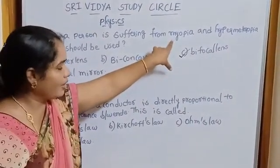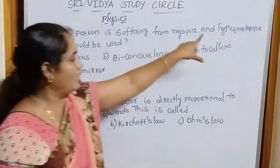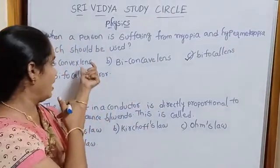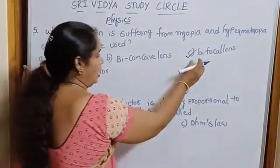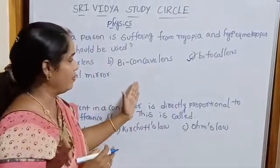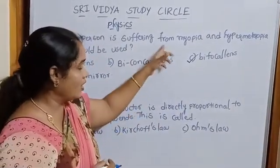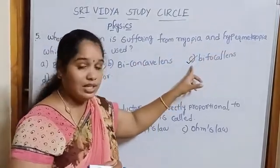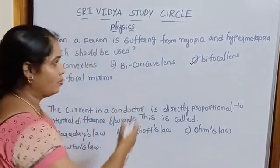Myopia can be rectified by using biconcave, and hypermetropia can be rectified by using biconvex. Here bifocal lens means one surface is prepared by convex and another one is prepared by concave. Then a person suffered from myopia and hypermetropia can be rectified by using bifocal lens. Option C.